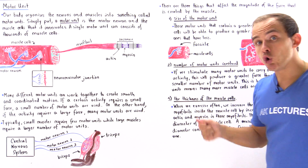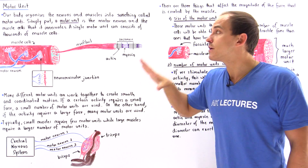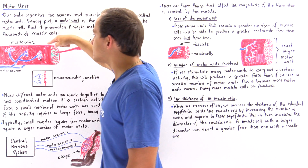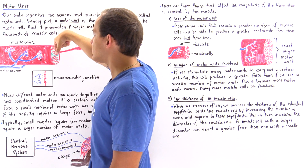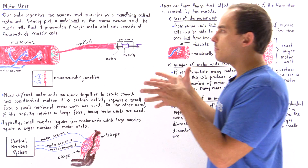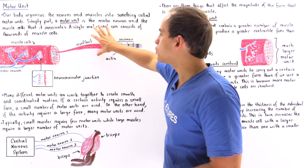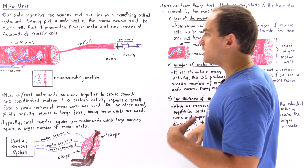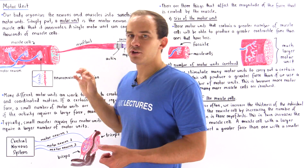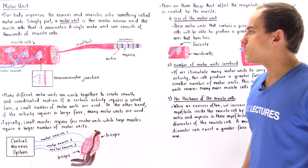A single motor unit always consists of a single neuron, but it can have thousands of muscle cells — thousands of different types of muscle cells in a bundle. Within the muscle cell, we have many fibers known as myofibrils, and these myofibrils themselves consist of the sarcomere unit. Sarcomere units consist of the myosin and the actin protein.